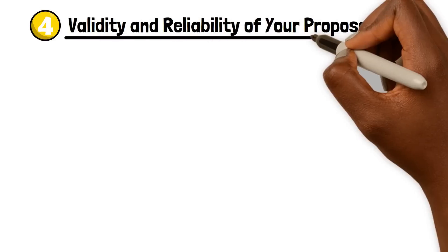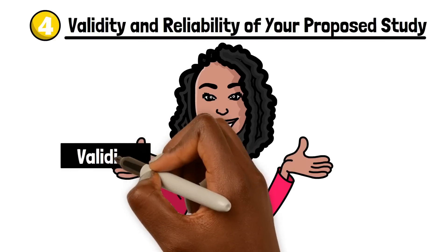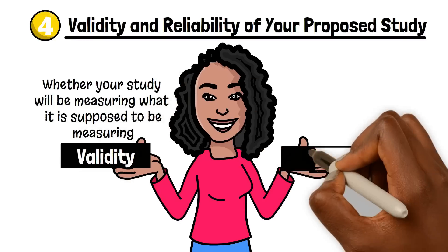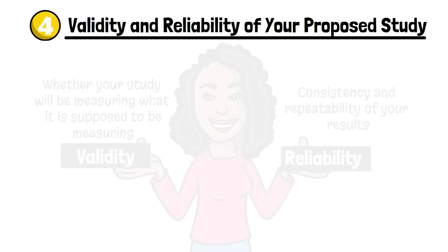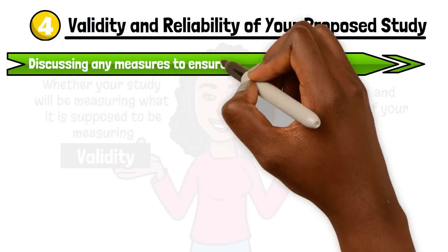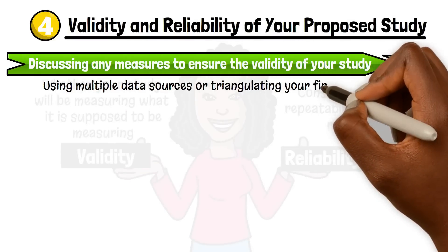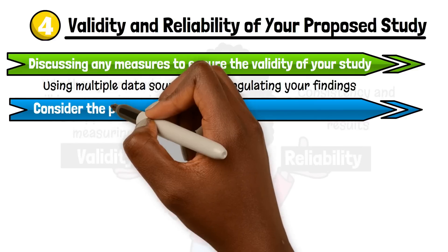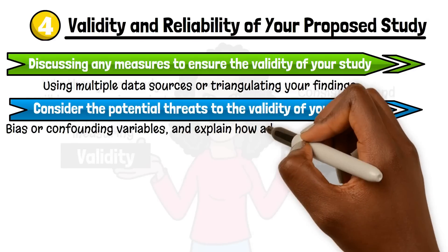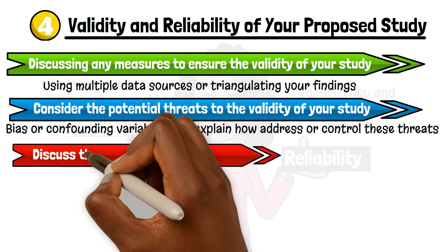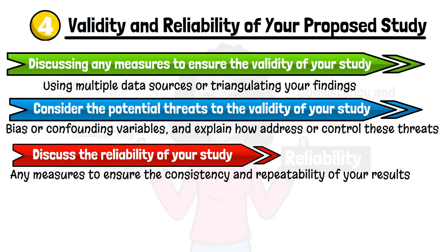Step 4: Discuss the validity and reliability of your proposed study. This is the final step in writing your research methodology. Validity refers to whether your study will be measuring what it is supposed to be measuring. Reliability refers to the consistency and repeatability of your results. You can address these issues by: first, discussing any measures you will take to ensure the validity of your study — this can include, for example, using multiple data sources or triangulating your findings; second, considering the potential threats to the validity of your study, such as bias or confounding variables, and explaining how you will address or control for these threats; and third, discussing the reliability of your study, including any measures you will take to ensure the consistency and repeatability of your results.